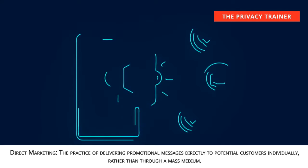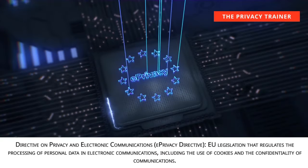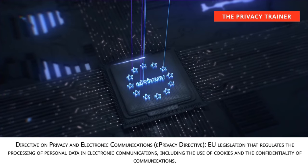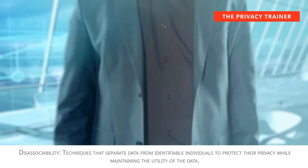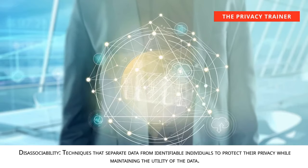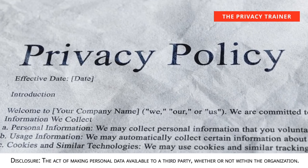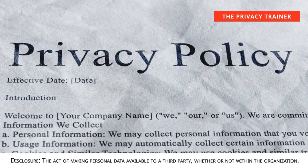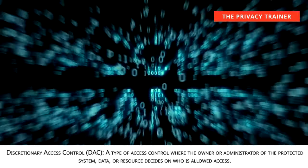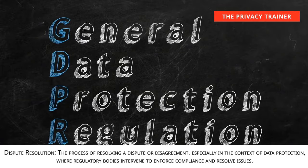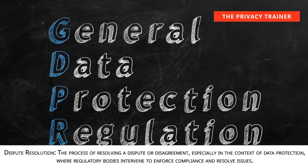Direct marketing. The practice of delivering promotional messages directly to potential customers individually, rather than through a mass medium. Directive on privacy and electronic communications, E-Privacy Directive. EU legislation that regulates the processing of personal data in electronic communications, including the use of cookies and the confidentiality of communications. Dissociability. Techniques that separate data from identifiable individuals to protect their privacy while maintaining the utility of the data. Disclosure. The act of making personal data available to a third party, whether or not within the organization. Discretionary access control, DAC. A type of access control where the owner or administrator decides who is allowed access.